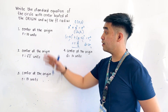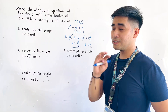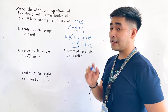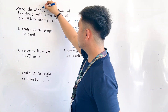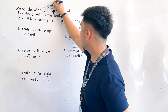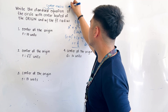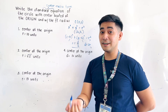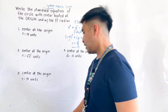Let us now try to solve these problems. We have four problems, and we will start with determining the standard equation of the circle with the center at the origin and with a given radius. The standard equation is also called the center-radius form, because this equation shows us the center and the radius.